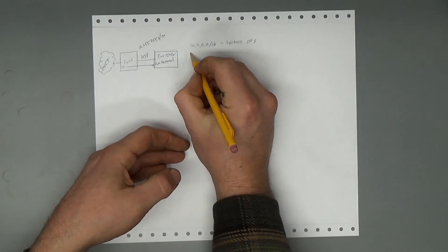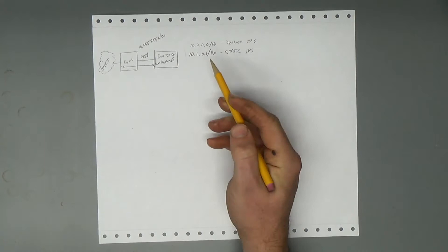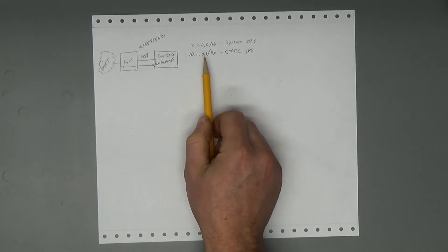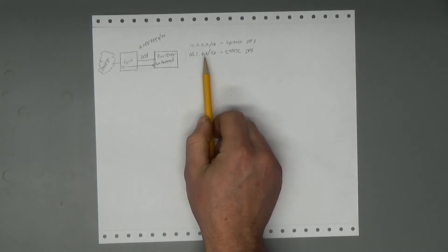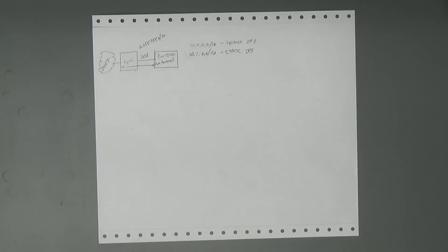This slash 16 network here, this will be for dynamic IPs. So that'll give us 65,000 simultaneous dynamic users, which I think we'll be lucky if we have a dozen people using the fucking thing. So, you know, good enough. And then we can use, we can have another slash 16 network, 10.1.0.0 slash 16, and we'll use that for static IPs.